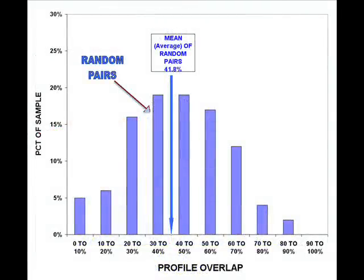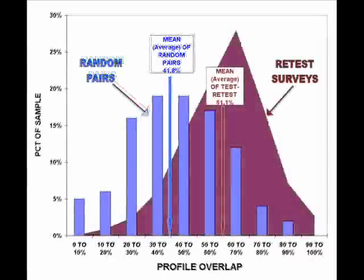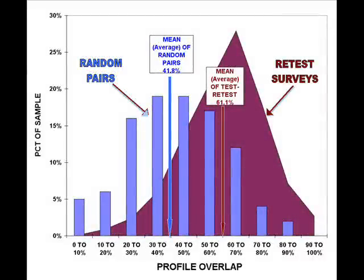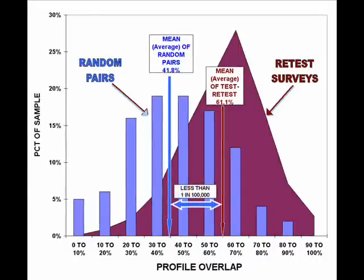And here is the baseline. It is a distribution of a random pairing of people from our 60,000 plus survey database — what you would experience if you were to arbitrarily interact with random people on the street. And here is the distribution of overlaps from the retest sample. Clearly, something is causing test and retest results to resemble each other, and it is statistically significant. There is less than a 1 in 100,000 chance that it is due to random variation. This difference is no accident.